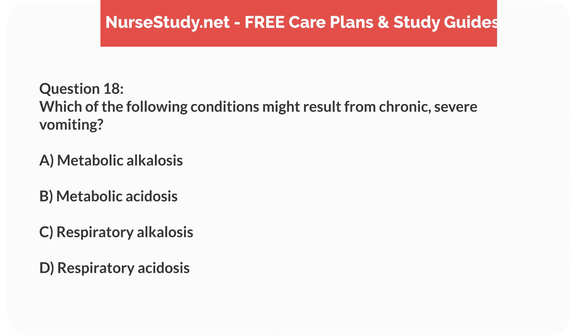Question 18. Which of the following conditions might result from chronic, severe vomiting? A. Metabolic alkalosis. B. Metabolic acidosis. C. Respiratory alkalosis. D. Respiratory acidosis.